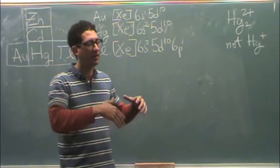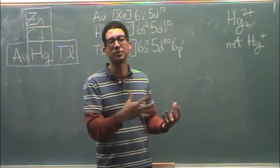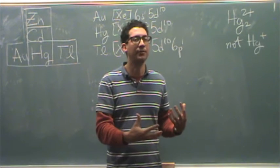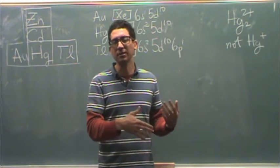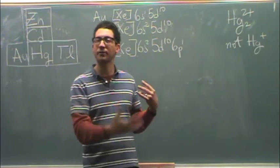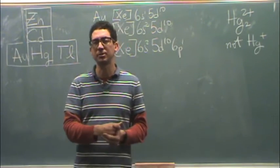And to get there, I have to go through why mercury is a liquid. It'll be helpful in our discussion. We're going to need to use a little bit of MO theory, some electron configurations, some Heisenberg uncertainty principle, etc.